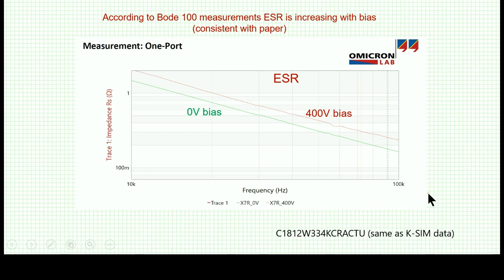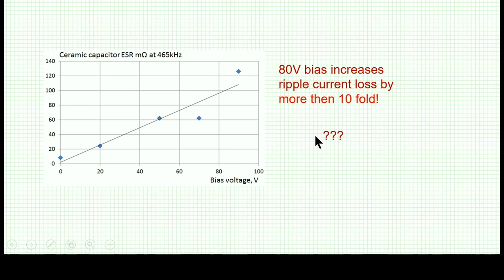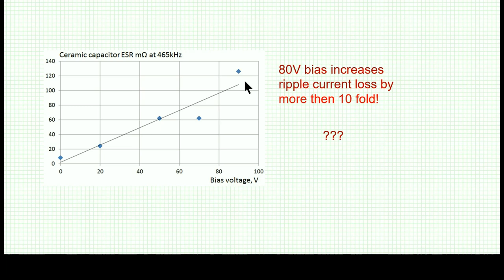Indeed, we found that with zero bias you see one value of ESR, and at 400 V bias on this high-voltage capacitor the ESR is clearly higher — no question about that. We then found another paper using a similar setup, which showed very large changes — between 10 milliohms and 120 milliohms — a tenfold increase. If you think a capacitor is 10 milliohms and it is actually 100, that is not something to ignore.